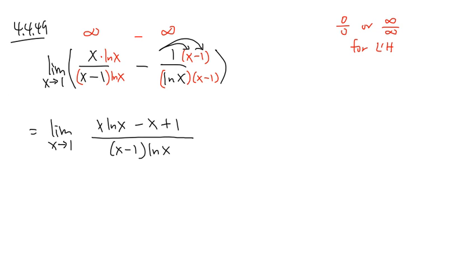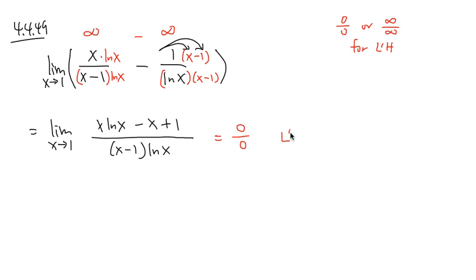Now, once again, we are going to check by plugging 1 into all the x to see what we get. Plugging 1 in: 1 times ln 1 is 0. Minus 1 plus 1 is also 0. So the numerator is 0. On the bottom, 1 minus 1 is 0, and ln 1 is also 0. So in this case, we got 0 over 0, and now we can use L'Hôpital's rule.